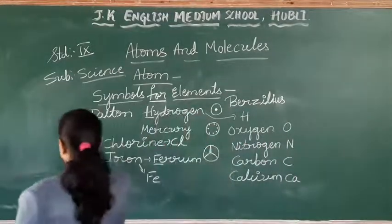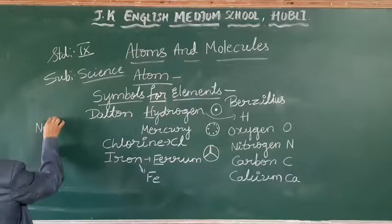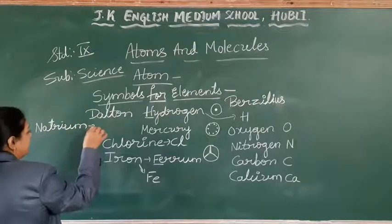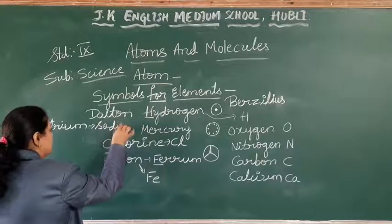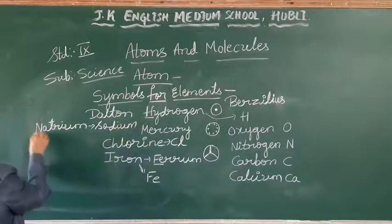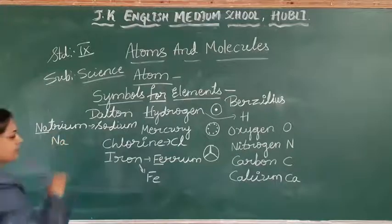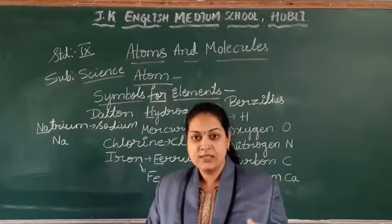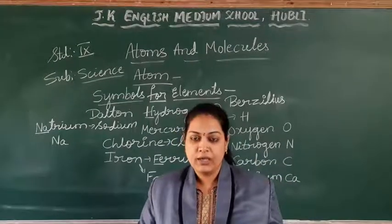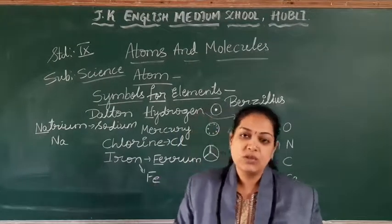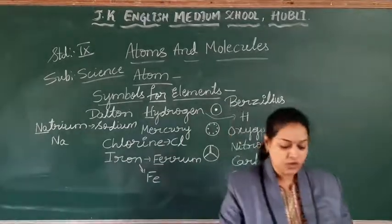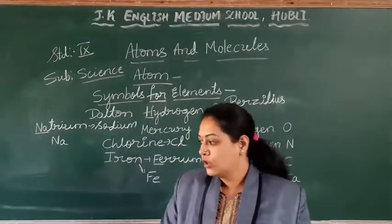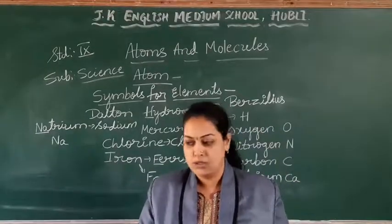Sodium — its Latin word is natrium, so Na is the symbol for sodium. Like this, gold, silver, mercury — so many elements come under this where either the Latin, Greek, or German word meaning was used to decide the symbols to avoid confusion.